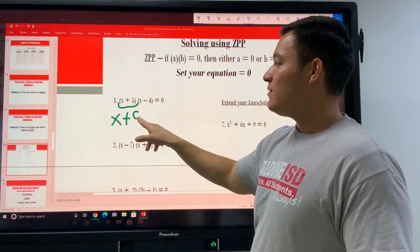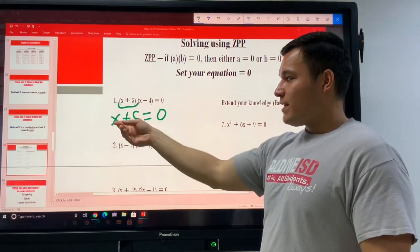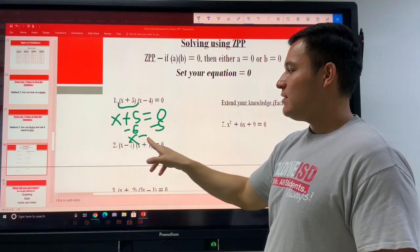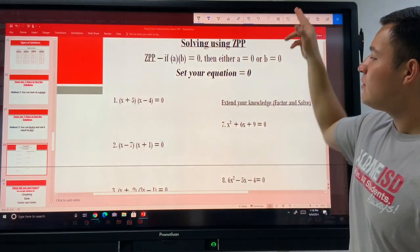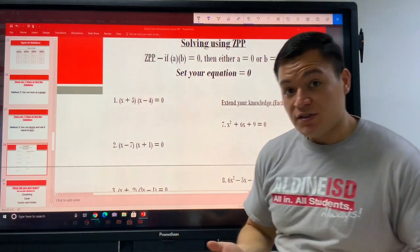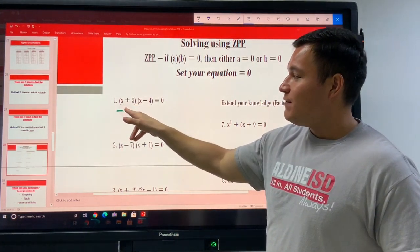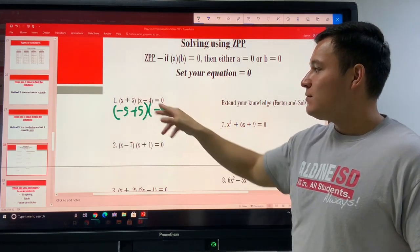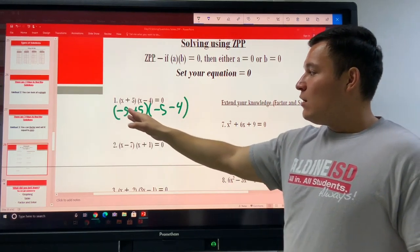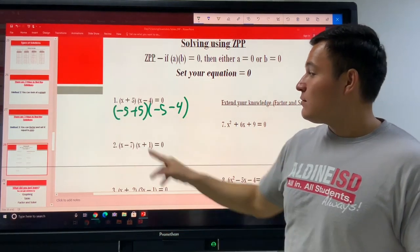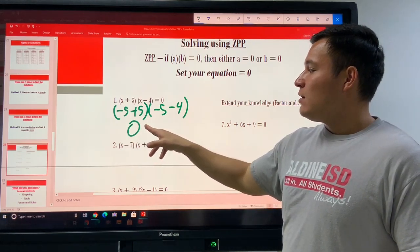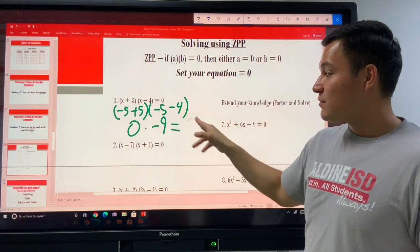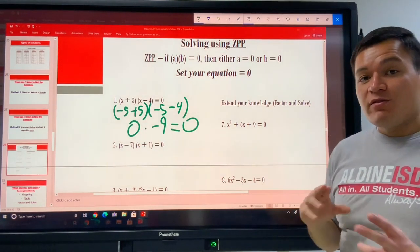So let's set this first one equal to 0. If these two things, these two parentheses are going to multiply to equal 0, then that means either the first one is equal to 0 or the second one is equal to 0. So let's just put x plus 5 equals 0. To solve this for x, all we have to do is subtract the 5. That means that x equals negative 5. And then let's just check and make sure that that works. If I put a negative 5 for x and I added 5 to it and I put a negative 5 on the other one and I subtracted 4 from it, what would negative 5 plus 5 make? 0 times negative 9.